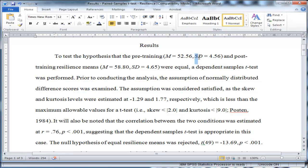Now the standard deviation is also reported, and that's symbolized by SD, and in this case it's 4.56. And the same thing was done for the post-training resilience means. So in this test, the null hypothesis is that the means are equal, and the alternative hypothesis is that the means are not equal.